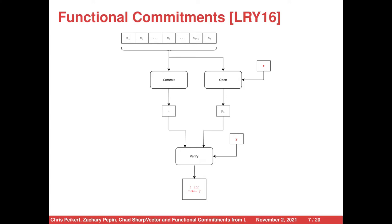Functional commitments can be viewed as a generalization of vector commitments, where rather than open taking an index, it takes a function f that's a member of some particular function family. Then when it comes time to verify, verify accepts if f of m is equal to y. This is a generalization of vector commitments because you can view a vector commitment scheme as a functional commitment scheme where the family of functions are just the d projections, if the vector is of length d.